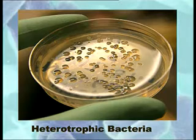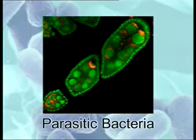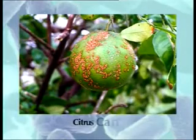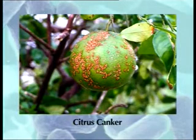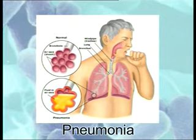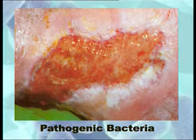Heterotrophic bacteria obtain their ready-made food from any organic source. They can be distinguished into three major nutritional categories. First, parasitic bacteria: these bacteria feed on living organisms. The organisms from which parasitic bacteria obtain their food are known as hosts. Some parasitic bacteria cause disease in plants, such as citrus canker, and in animals, such as pneumonia and typhoid. Such disease-causing bacteria are called pathogenic bacteria.